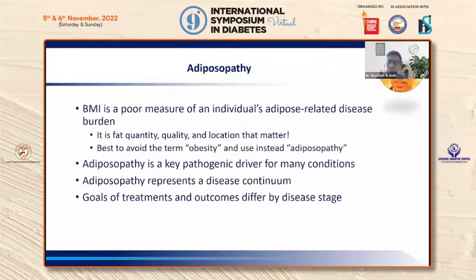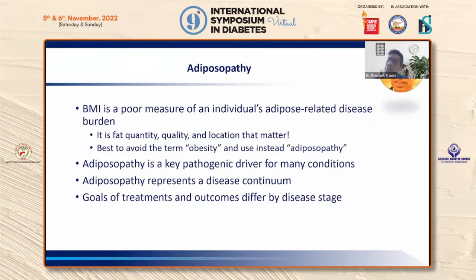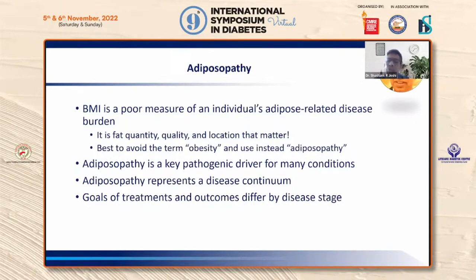BMI is a very poor measure of an individual's adipose-related disease burden. It is the fat quantity, fat quality, and location that matters. Therefore it is best to avoid the term 'obesity' and instead use 'adiposopathy' or ABCD — adiposity-based chronic disease. Adiposopathy is an etiopathogenic driver of many conditions and represents a disease continuum; therefore, based on goals, treatments, and outcomes will differ by disease stage.